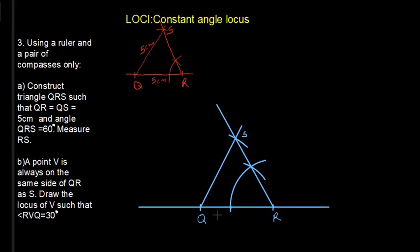So we know that QR was measured as 5 cm and also QS will measure 5 cm. So that is for part A.